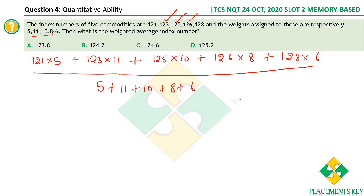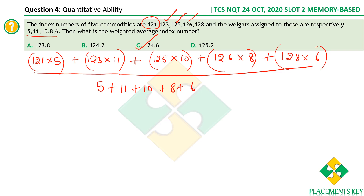On simplifying, you get approximately 124.6. The concept: multiply each value by its corresponding weight, sum those products, then divide by the total sum of weights. That gives you the weighted average.